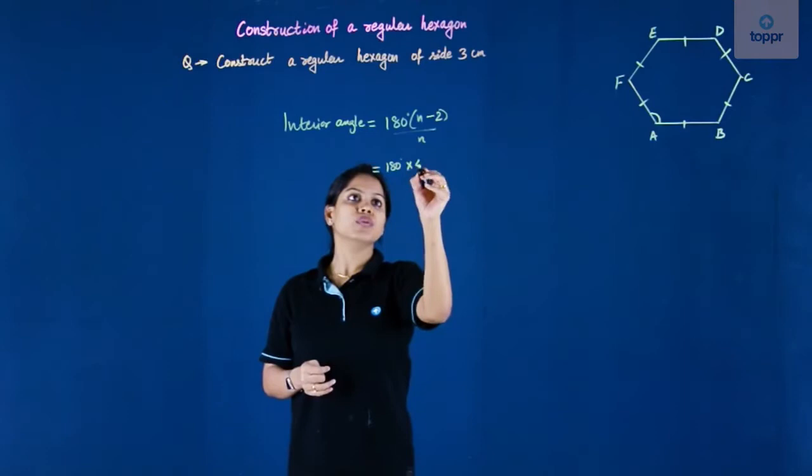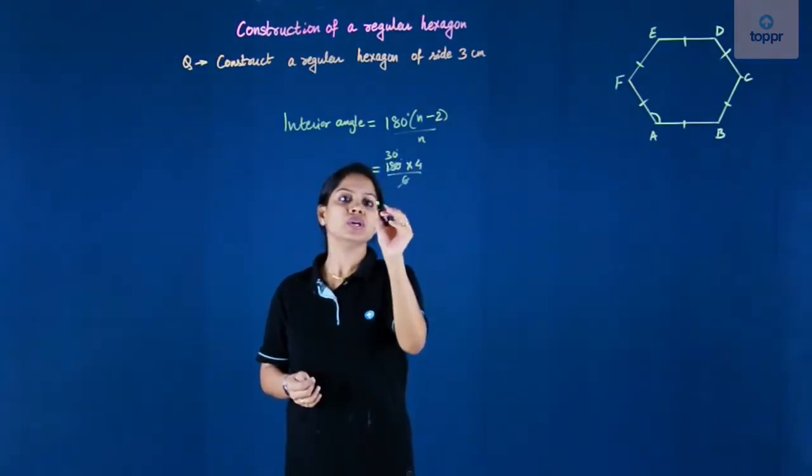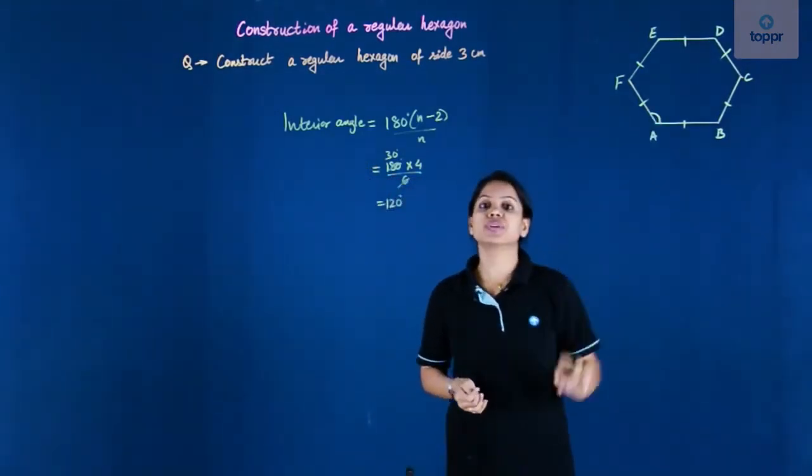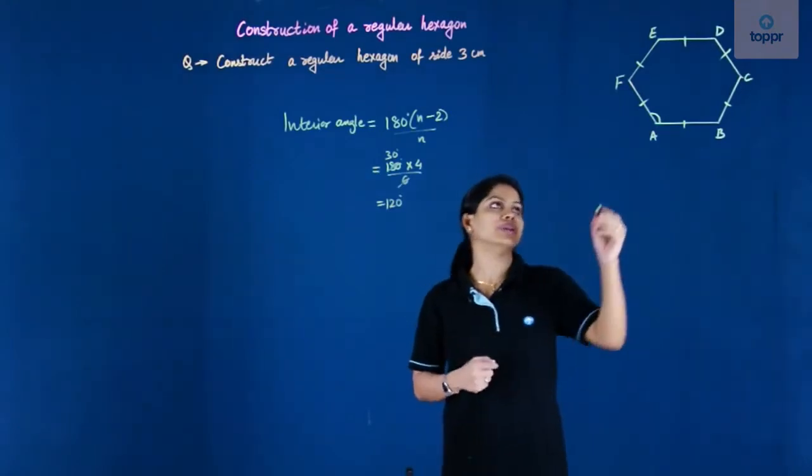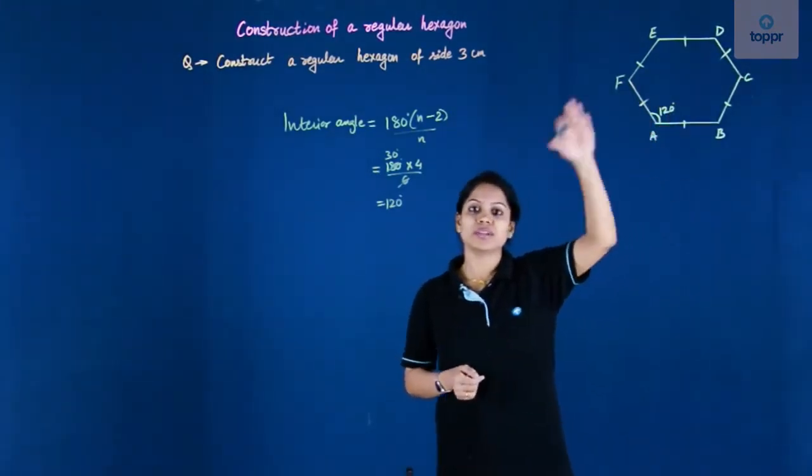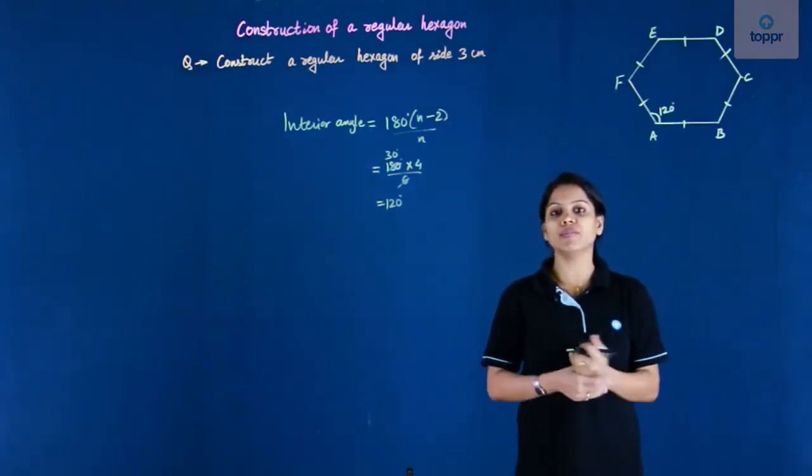So what you have here will be 180 degree, 6 minus 2 is 4 upon 6. So this is 6 into 30, so what you have is 120 degree. So each angle of this regular hexagon is 120 degree and all angles are equal, so obviously every angle will be 120 degree.